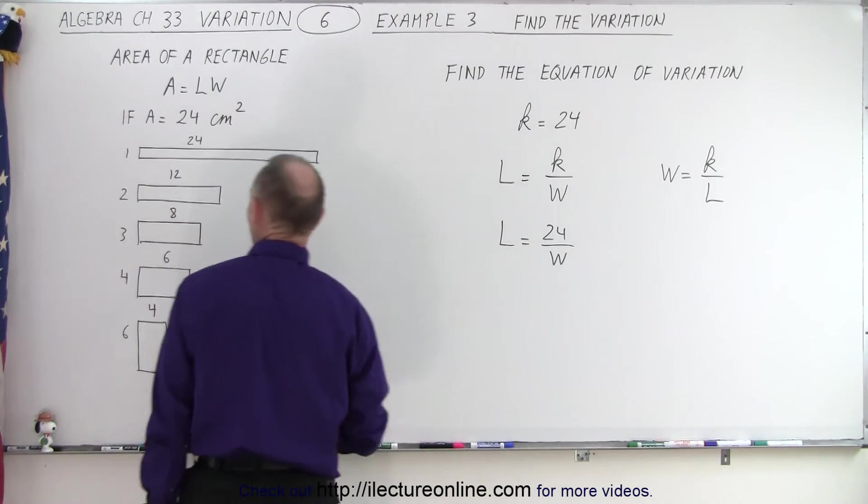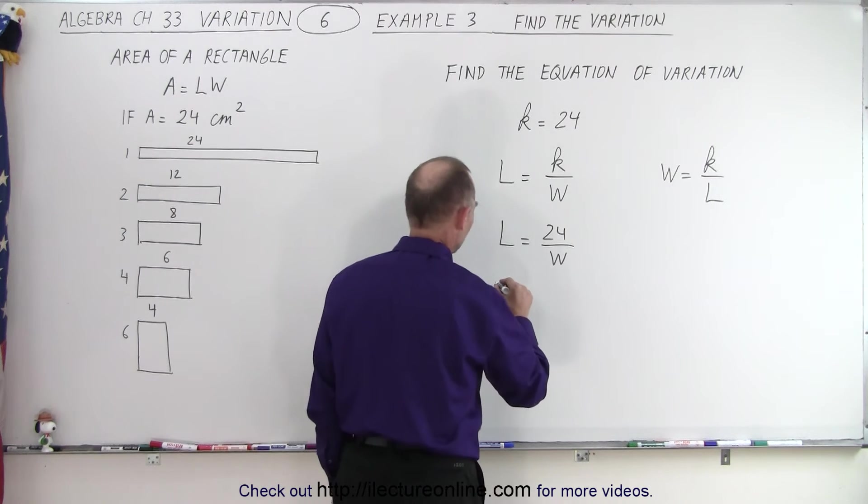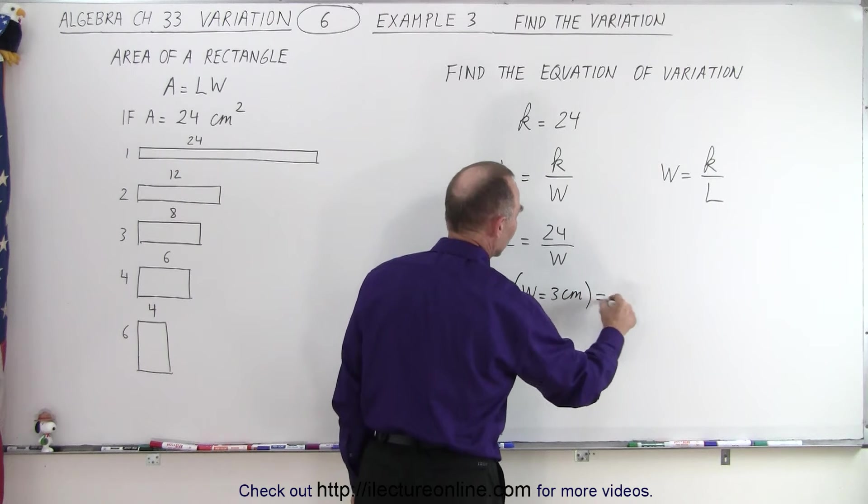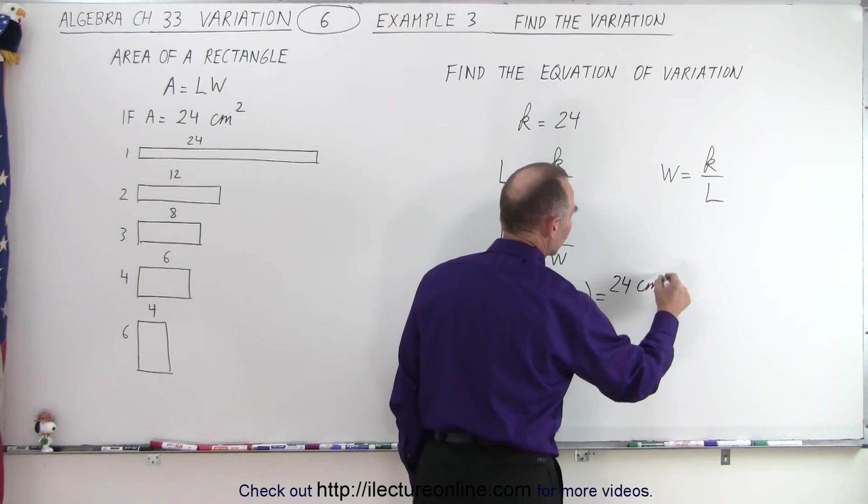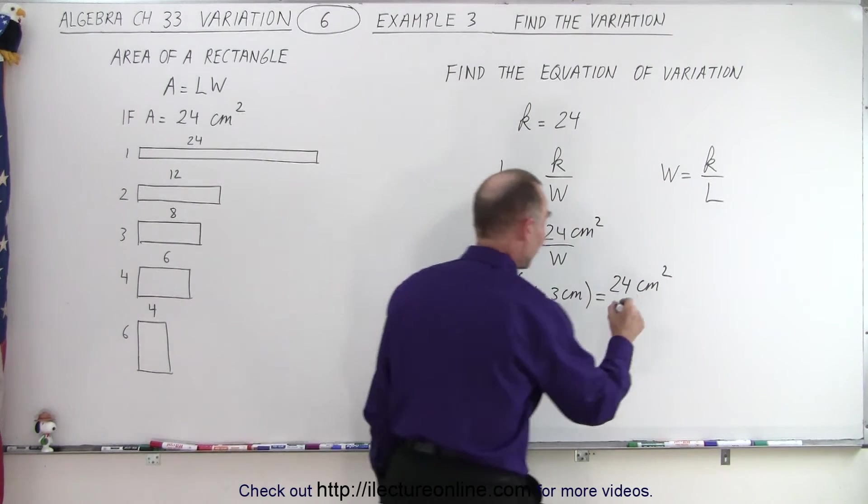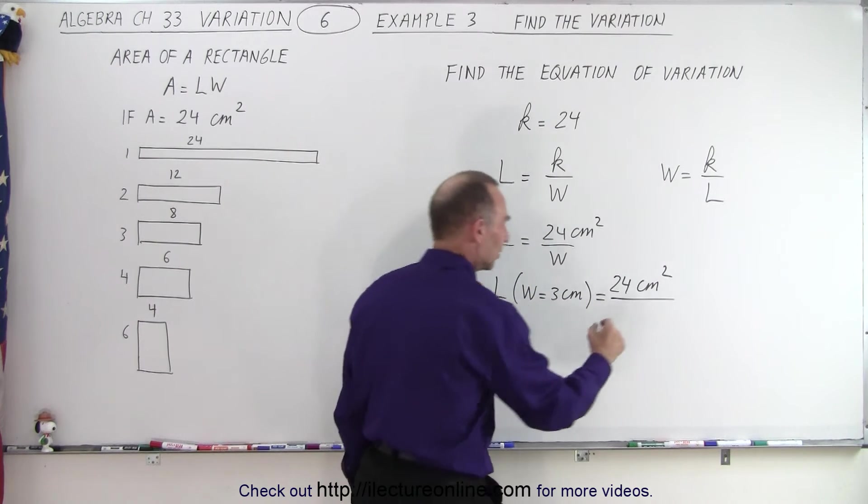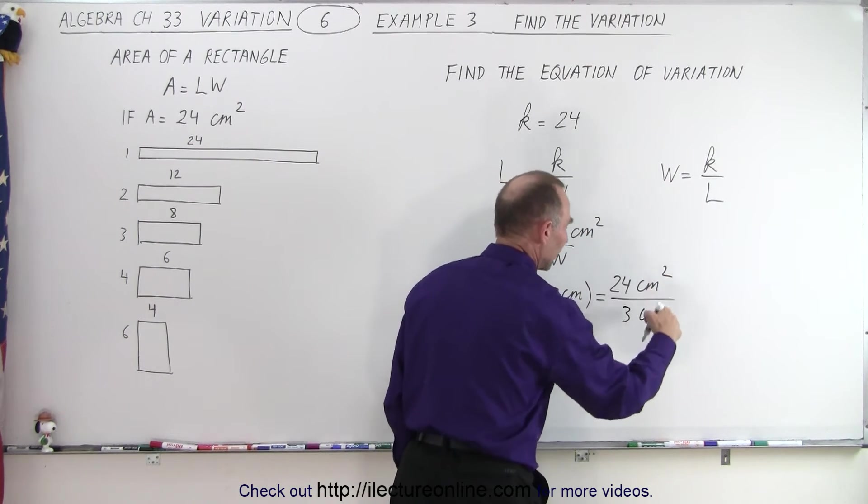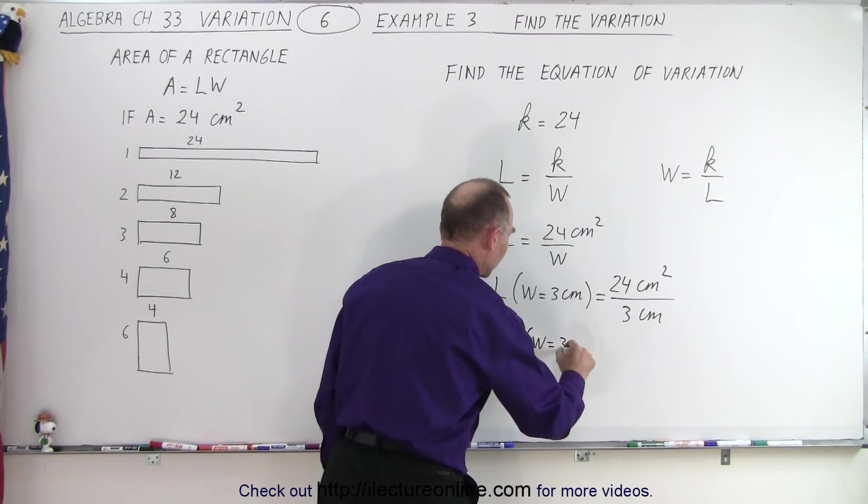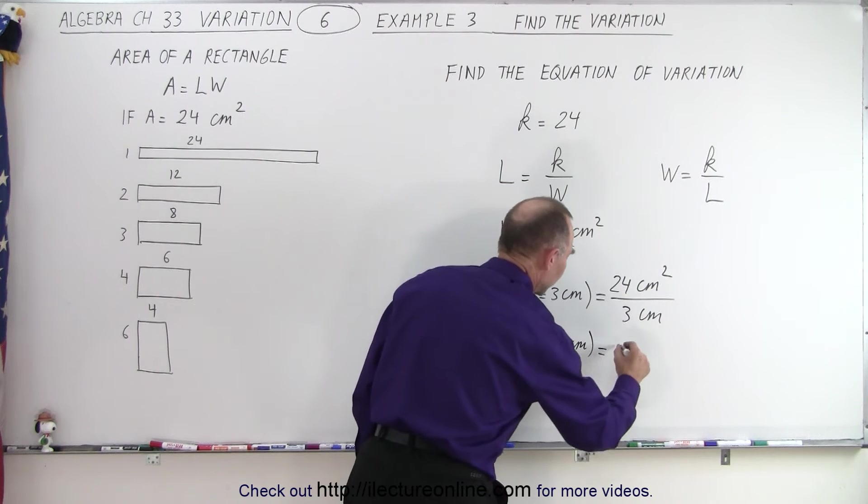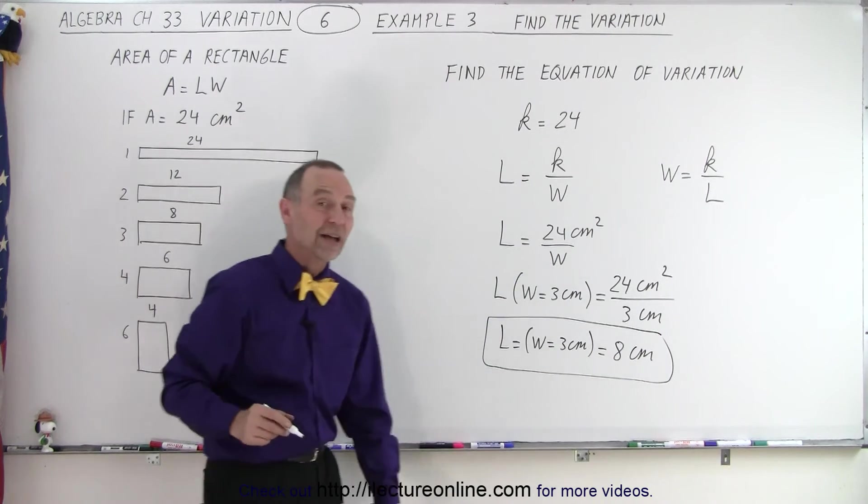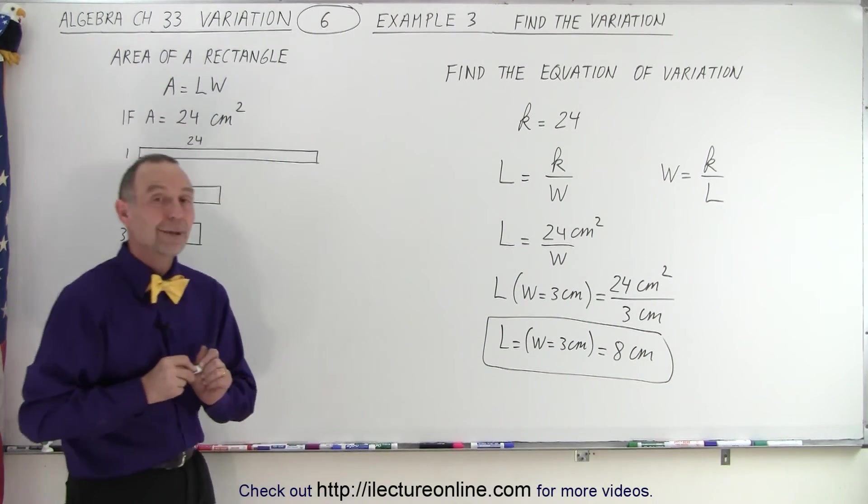Let's try it. Let's try W equals 3 and see what happens. So here we can say L, when W is equal to 3 centimeters, is equal to 24 centimeters squared, because we do have to write in the units, centimeters squared, divided by the width, and we pick the width equal to 3 centimeters. And centimeters squared by centimeters just gives us centimeters. So L, when the width is equal to 3 centimeters, is equal to 24 divided by 3, which is 8 centimeters. And there we go. That is how we find the equation, and that's how the equation can then be used.